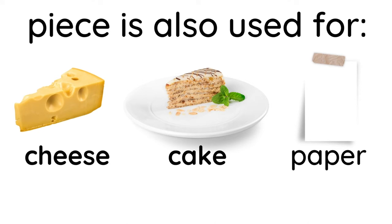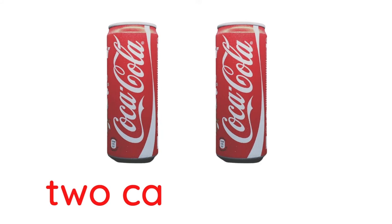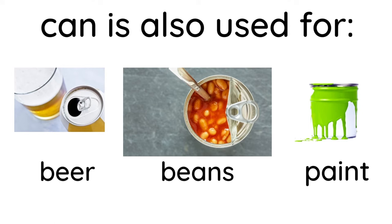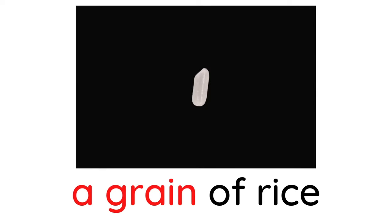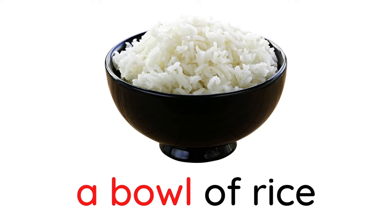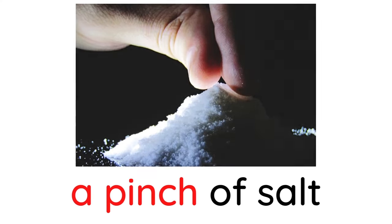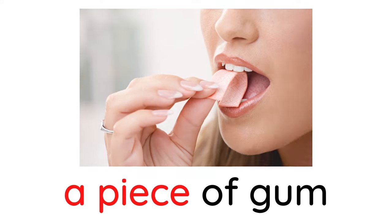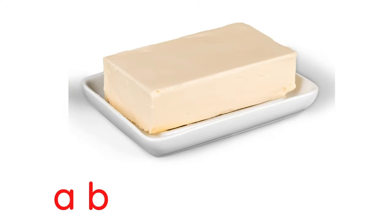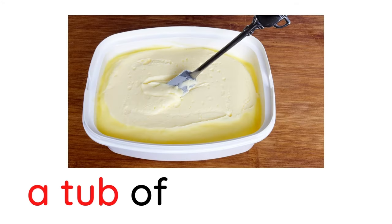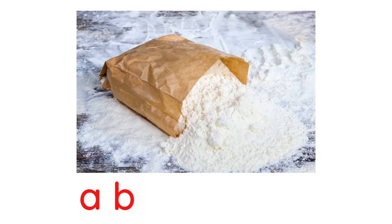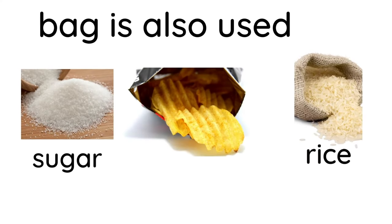Two bars of chocolate. A bar is also used for soap. A piece of chocolate. Two pieces of chocolate. Can is also used for beer, beans, or paint. A grain of rice, a bowl of rice, a pinch of salt, a bag of salt, a piece of gum, a pack of gum, a stick of butter, a block of butter, a tub of margarine, a bag of flour.